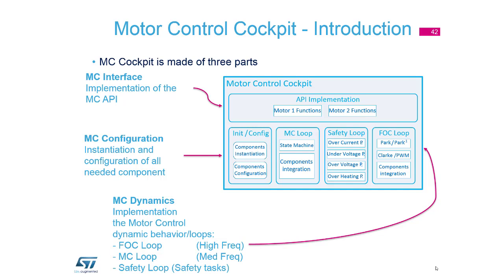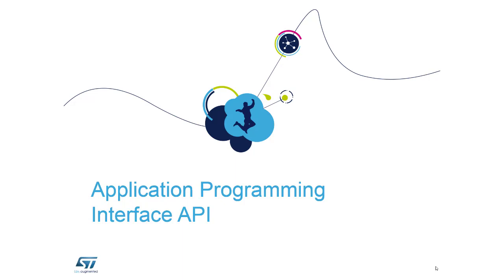The motor control cockpit is the most important part and contains three sub-parts. First is the motor control interface — we have two motors, we need to start both, and so on. Then we have a small but important configuration part where we have to set up our library and peripherals. The last part covers dynamics with loops, handled with an FOC task: high frequency motor control, medium frequency, and a safety part. That's all about the structure.